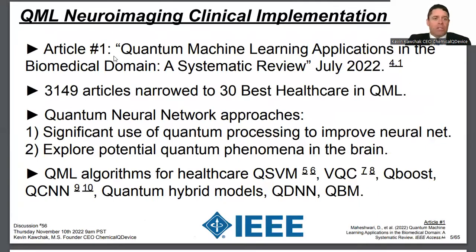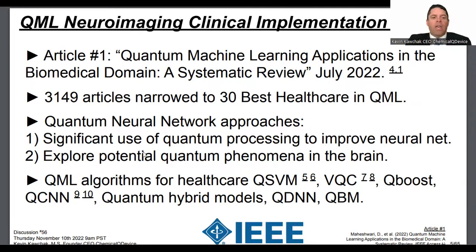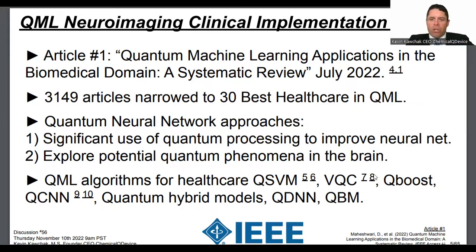In this systematic review, quantum neural network approaches show significant use of quantum processing to improve neural nets. Potentially later, once qubit counts go up and noise goes down, there's the possibility of exploring quantum phenomena in the brain. QSVM and VQC are the top two techniques, and there are others varying in their level of quantumness — from locked algorithms to more learning-based ones.